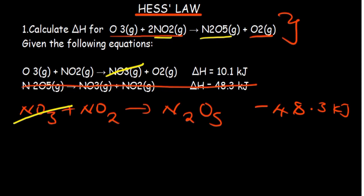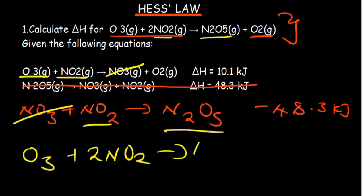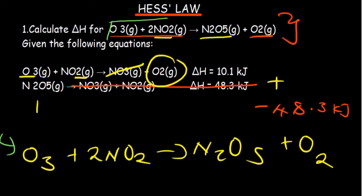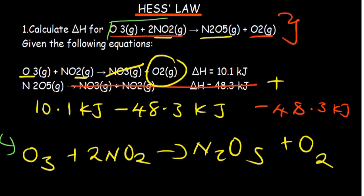Let's combine what we have. On the reactant side I have two of the same species, giving us two. On the product side there's one species plus oxygen. Comparing this final equation against the given overall equation — yes, it's matching up. So we just add the remaining enthalpies for the two reactions: 10.1 kilojoules plus negative 48.3 kilojoules, which gives us negative 38.2 kilojoules. This is the enthalpy of the reaction.